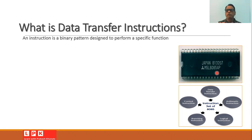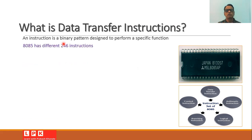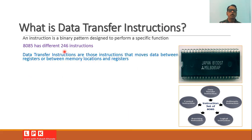Whenever we want to use the microprocessor in a certain application, it is necessary that we must feed instructions to the microprocessor. An instruction is a kind of binary pattern that is designed to perform a specific function or task. 8085 has many instructions — about 246 different instructions are available for the microprocessor 8085.